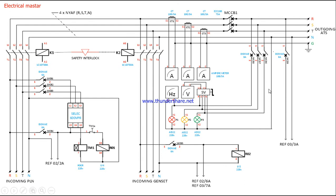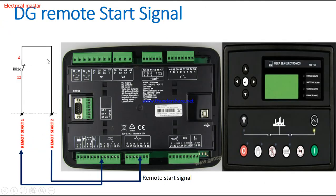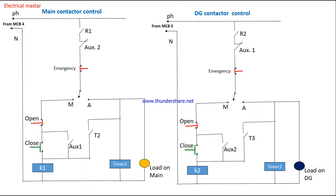In summary, whenever the main supply is received, the MCBs are closed, the phase failure relay senses the voltages and closes terminals 15 to 18, the timer activates, and after a 3–4 second delay the timer NO closes, activating R01. When the generator is already running and the main supply comes back, a delay time is given before the generator stops. After 2–3 seconds R01 picks up, its NO closes the main contactor, and the 12V remote start signal is removed from the DFC controller, so the generator switches off. This is how the ATS panel operates.